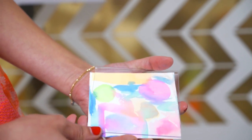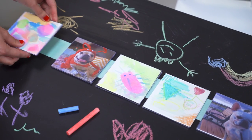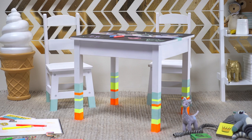Fill the magnet frames with drawings, photos, and other fun images and attach them to the middle magnetic panel. Then use the chalkboard table as a canvas and let your kids create and play.